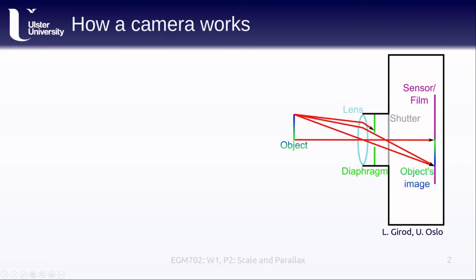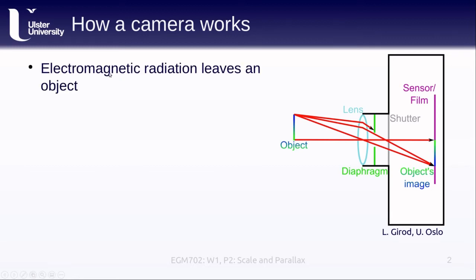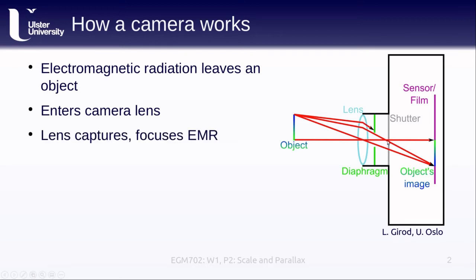To begin with, let's talk about how a camera works. This helpful diagram from Luc Giroux at the University of Oslo shows an object, a lens, a diaphragm, a shutter, the camera body, and a sensor or film where we record the image. Electromagnetic radiation leaves an object — either reflected, emitted, or transmitted — enters the lens, which captures and focuses it, directing it toward the sensor.